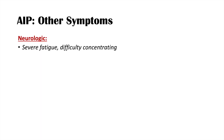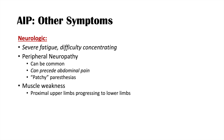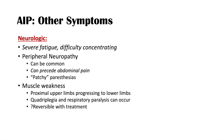Neurologic symptoms include severe fatigue, difficulty concentrating, and peripheral neuropathy, which can actually precede the abdominal pain. These peripheral neuropathies are called patchy paresthesias - patients get paresthesias in different patches on their body. There can also be muscle weakness, generally proximal upper limbs progressing to lower limbs. Quadriplegia and respiratory paralysis can occur as well, and there is some question of whether, if they progress to these severe events, they are reversible with treatment.